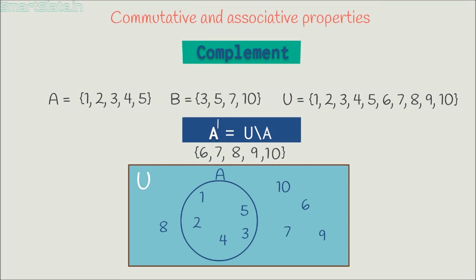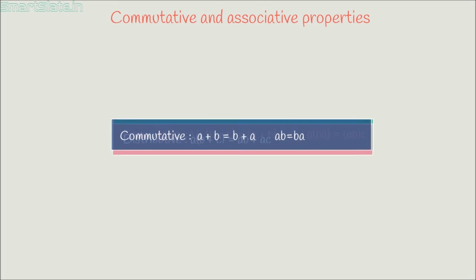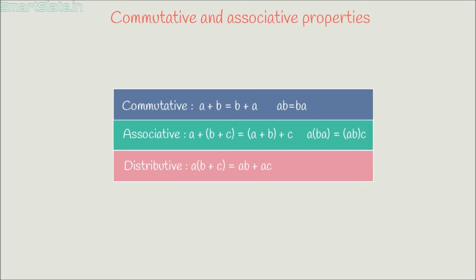Now we know the basic operations on sets. Let's try to find out whether these operations obey basic arithmetic properties like commutative property, associative property and distributive property. I hope you remember these properties. If not, let's have a quick glance on this table. Let's verify if these properties hold true with sets. The first one we are going to verify is commutative property of union and intersection.